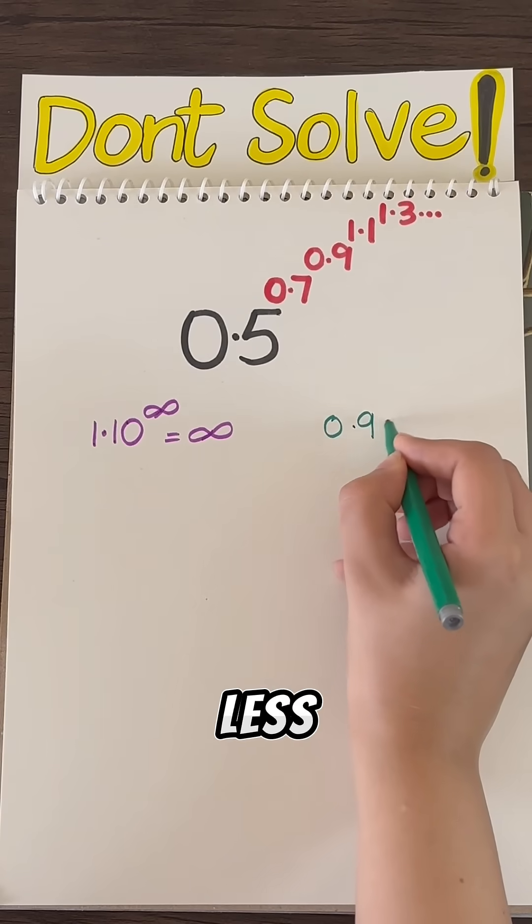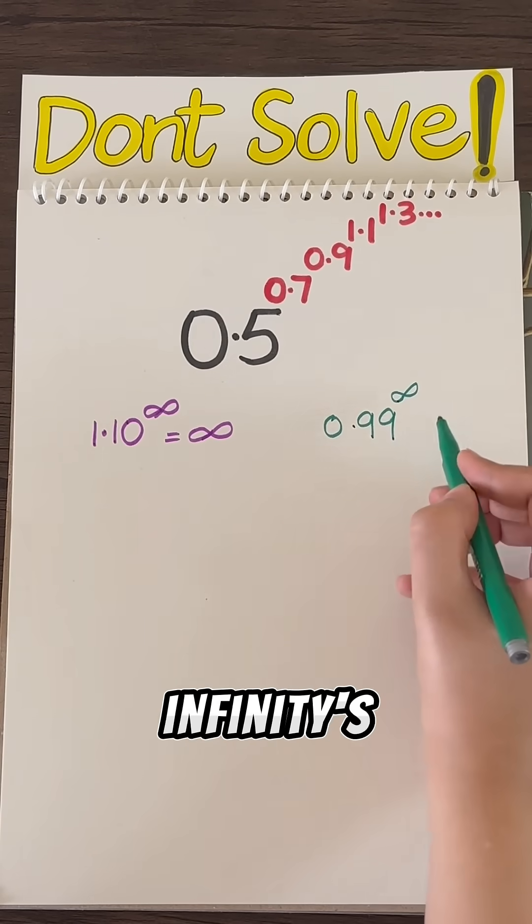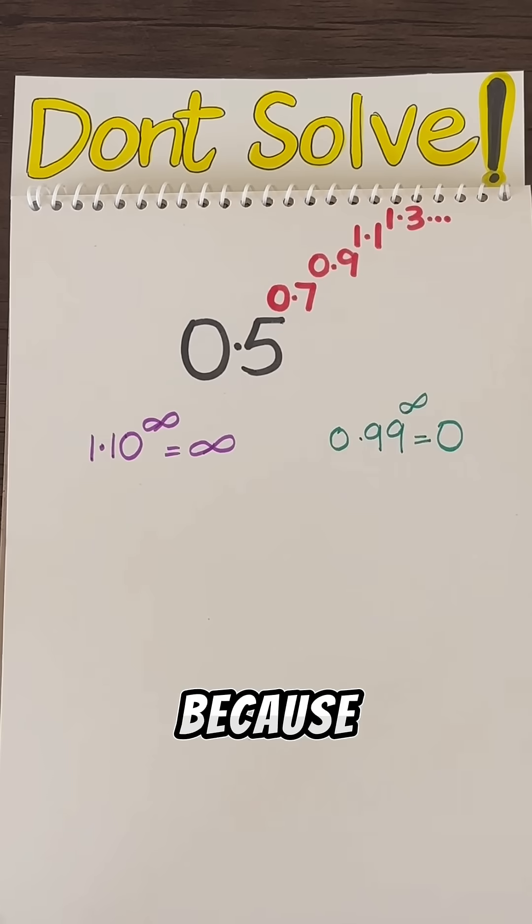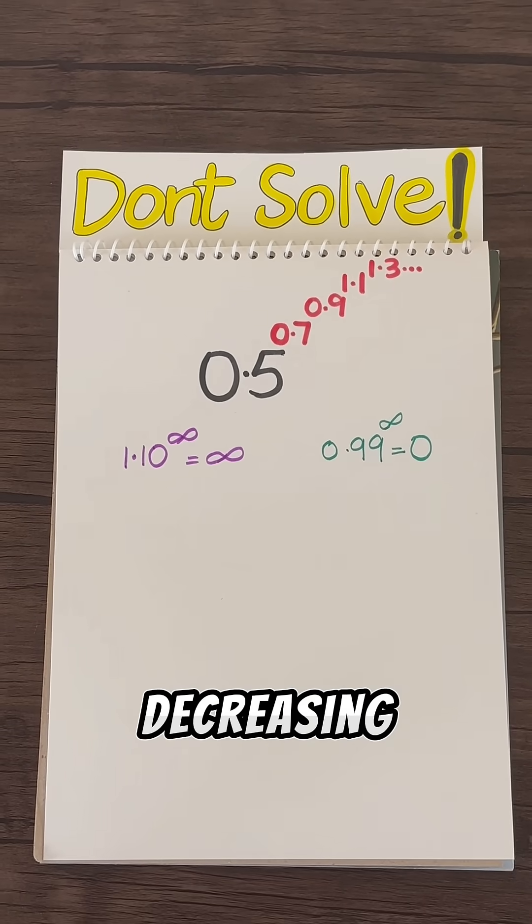But on the other side, if you have a number less than 1 and raise that to infinity's power, it becomes 0 because it keeps decreasing.